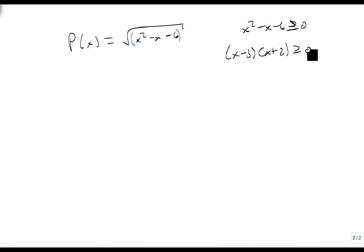This factors as (x-3)(x+2) ≥ 0. This is a quadratic inequality, so all we have to do is put our numbers on, the -2 and the 3. They're both filled in circles because it's an or equals, and they're both from the top.